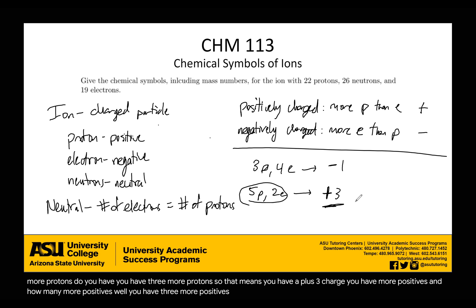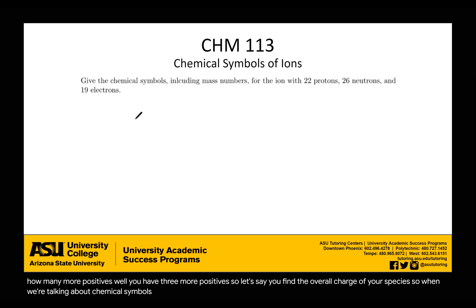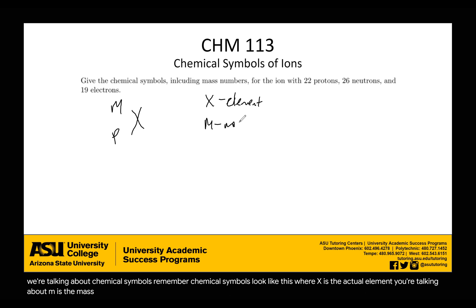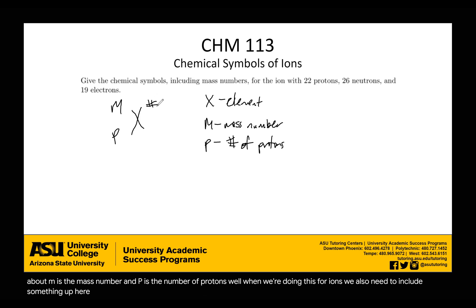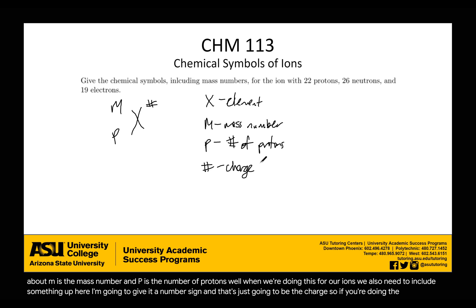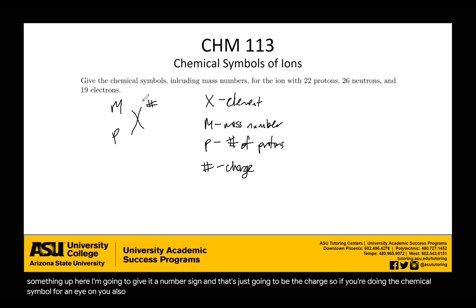So let's find the overall charge of your species. When talking about chemical symbols, the symbol looks like this: X is the actual element, M in the upper left is the mass number, and the lower left is the number of protons. When writing the symbol for an ion, you also need to include the charge in the upper right position.